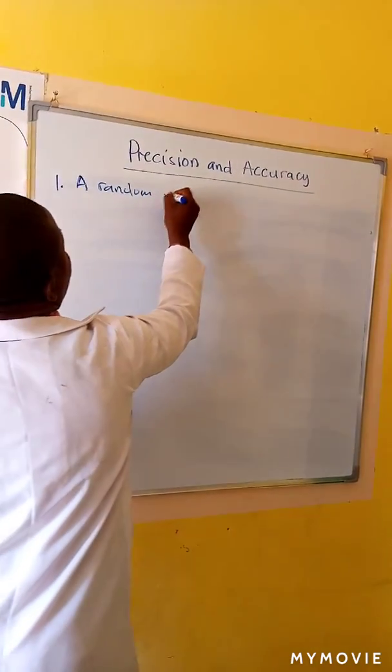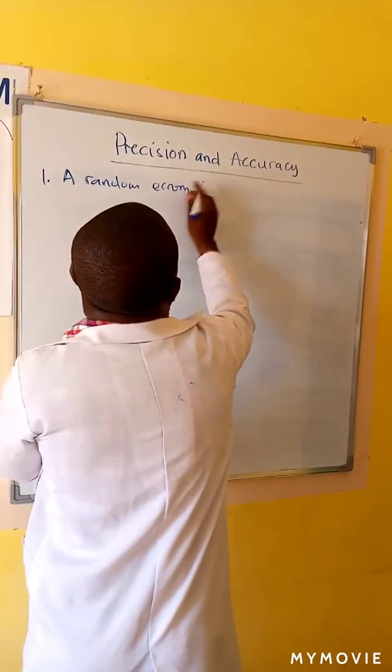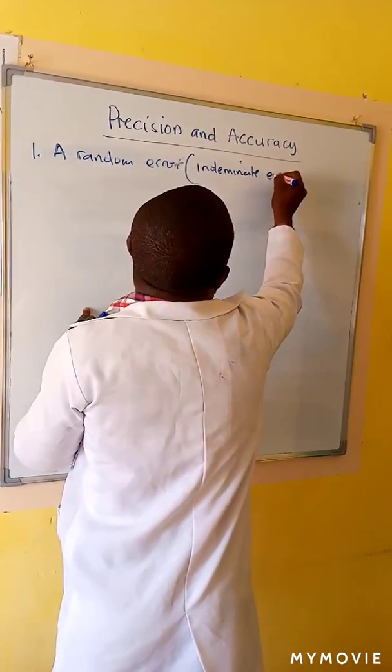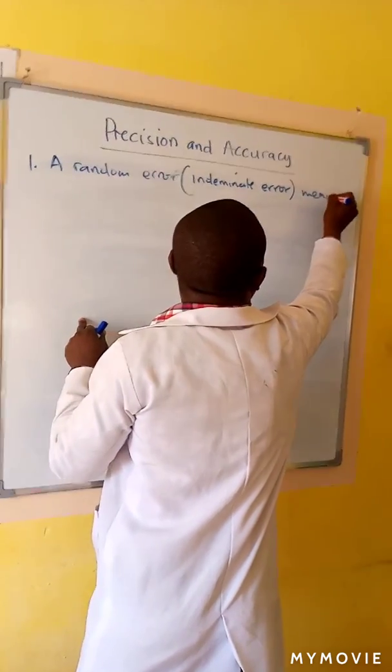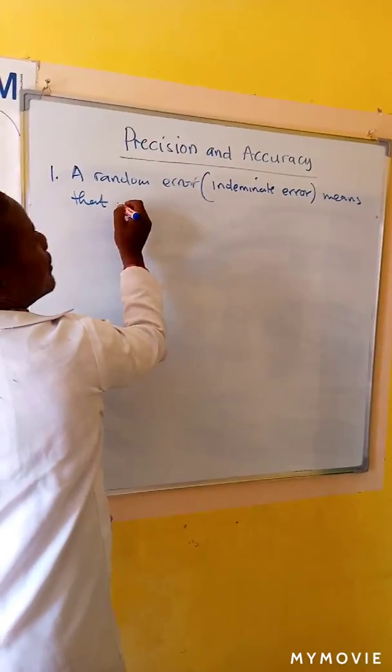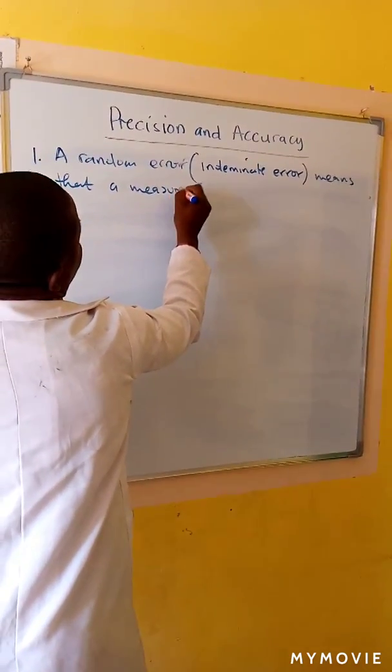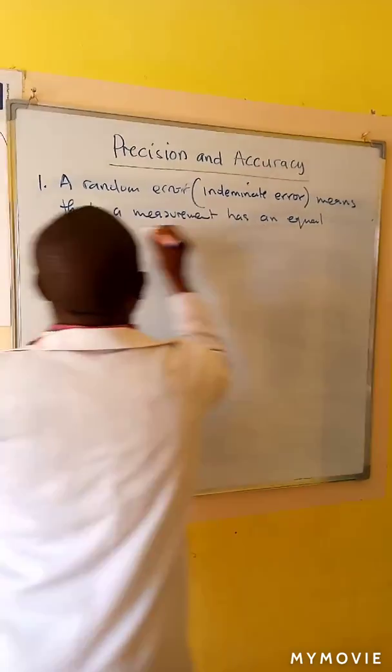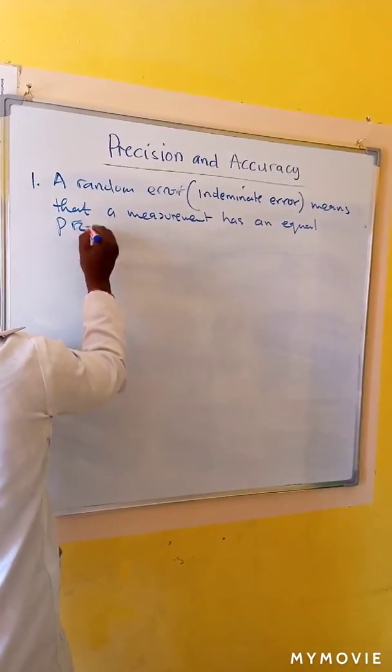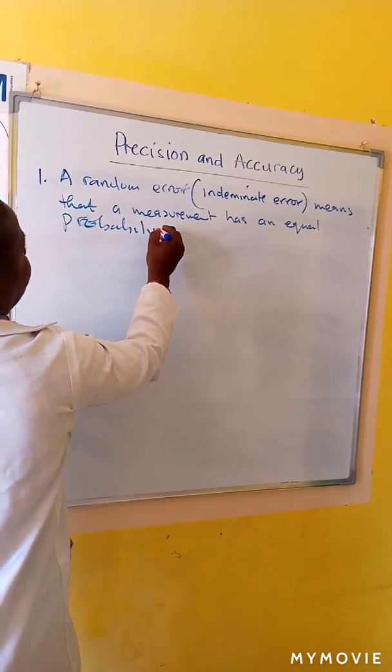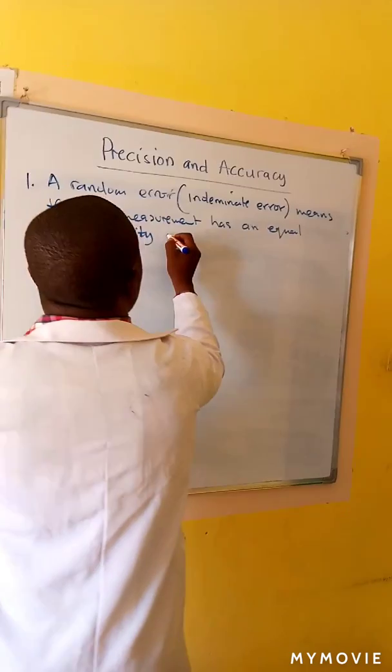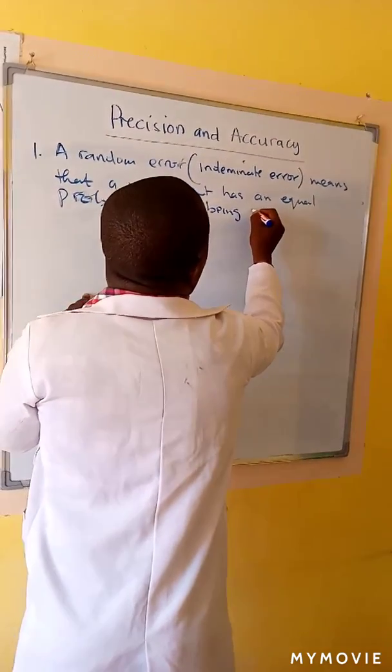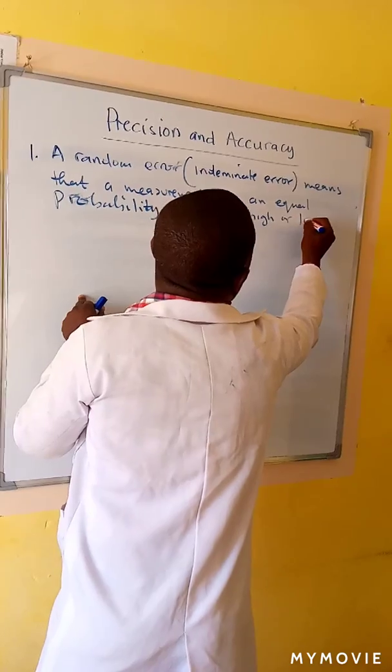A random error, also known as indeterminate error, means that a measurement has an equal probability of being high or low.